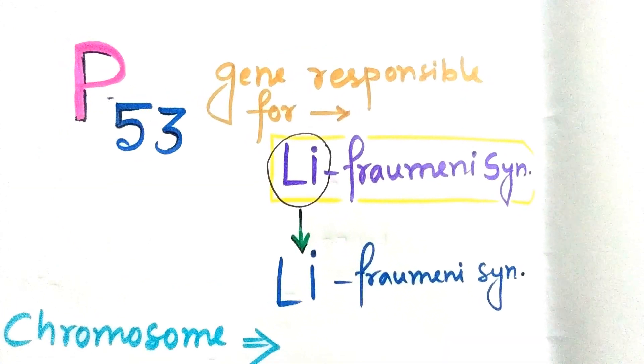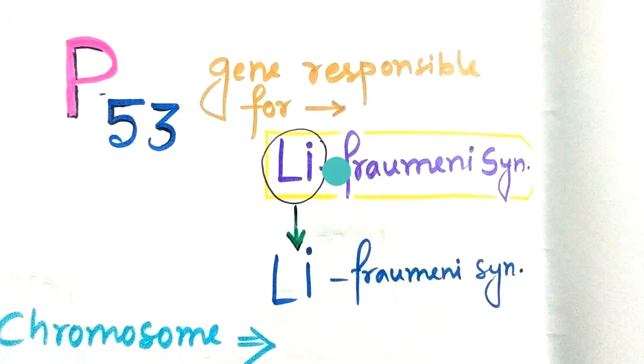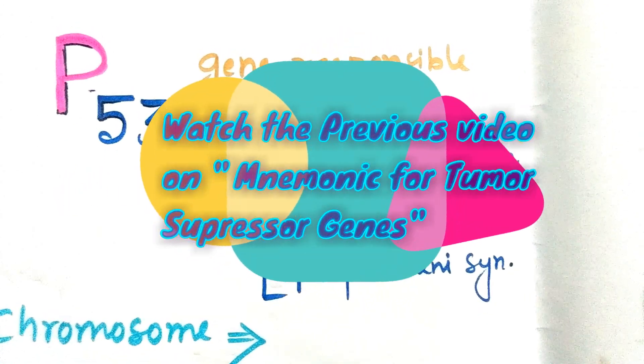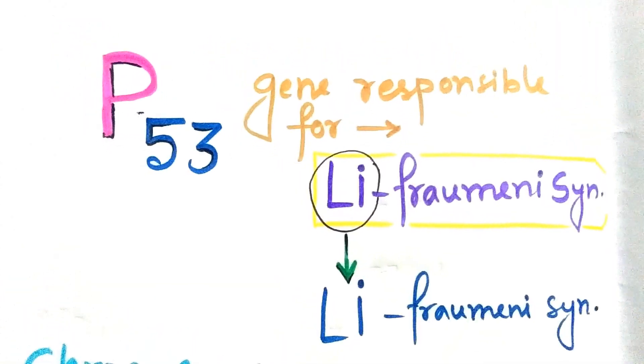This is the extension part of my previous video about mnemonics for tumor suppressor genes, their location in the chromosome. The p53 gene was left out.